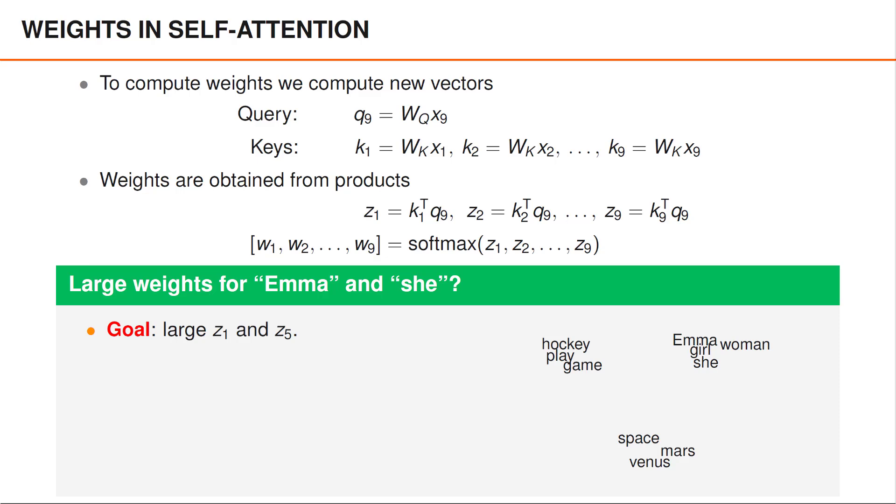Since these were the first and the fifth words in our sentence, this means that we want large values for Z1 and Z5.